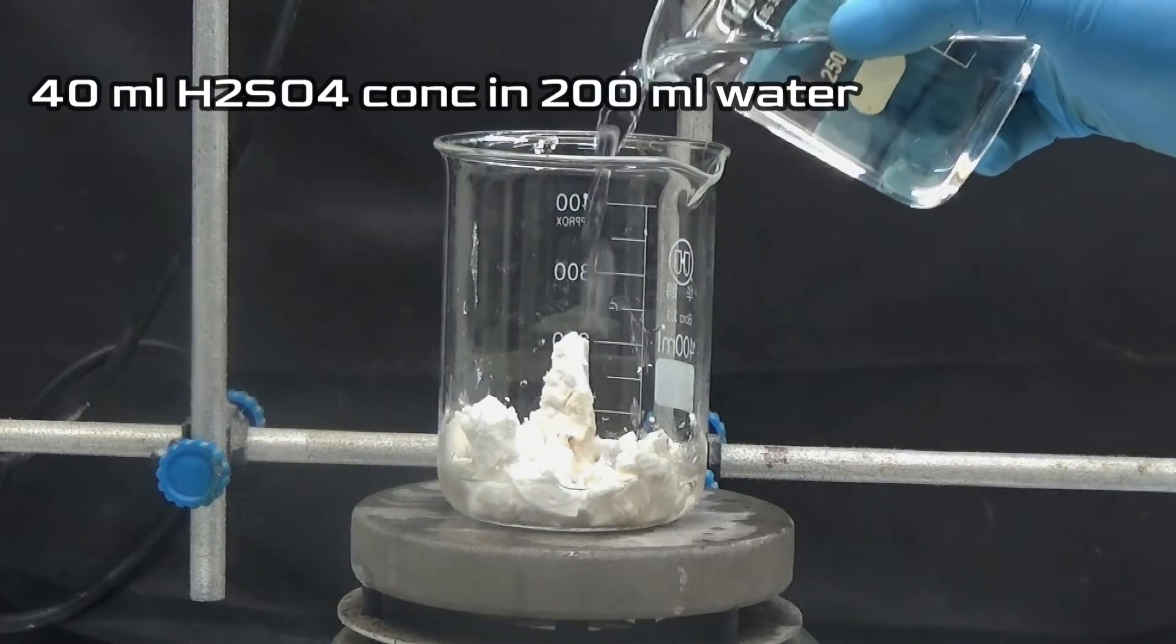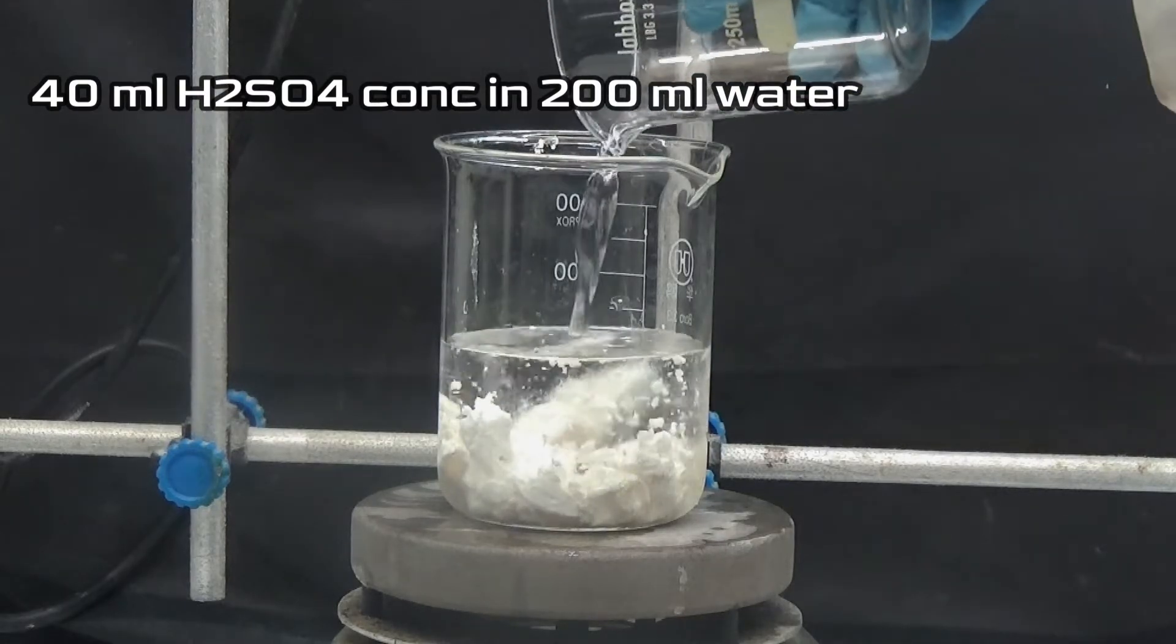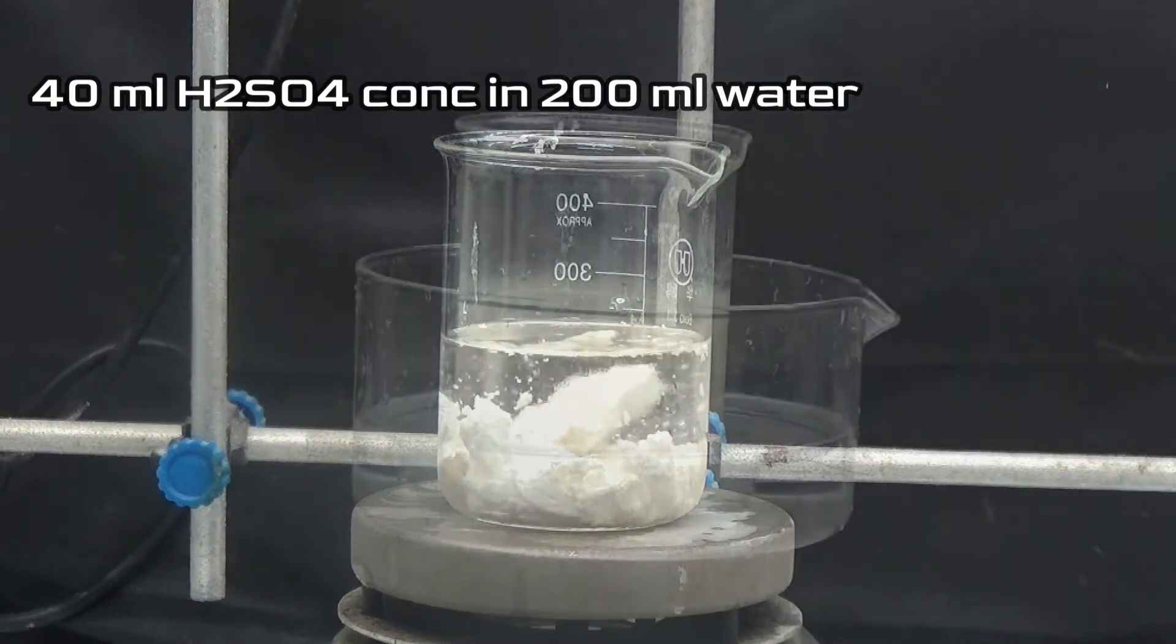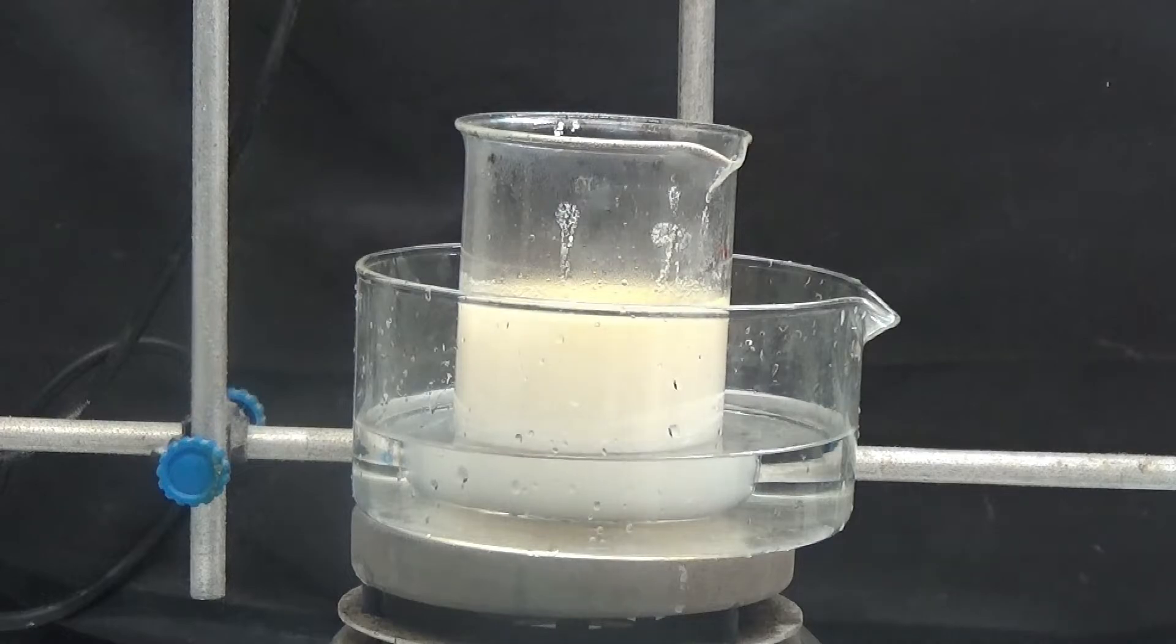Put the crystals in a 500 milliliters glass and add a solution of 40 milliliters of concentrated sulfuric acid in 200 milliliters of water. Once the diluted sulfuric acid has been added, put the glass in a warm water bath and shake for 30 minutes.